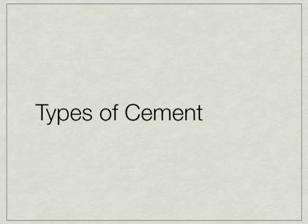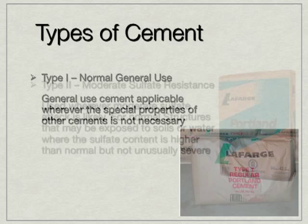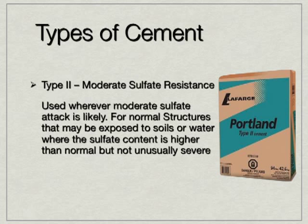The proportions of these compounds influence the performance of the cement. Let's look at the different types of cement. Type 1 cement is a normal, general use cement. Its applications include reinforced buildings, bridge decks, concrete masonry units, and floors — anywhere that the special properties of other cement types are simply not necessary. Type 2 cement is considered moderate sulfate resistant cement. It is used wherever moderate sulfate attack is likely — for normal structures that may be exposed to soils or water where the sulfate content is higher than normal but not unusually severe.